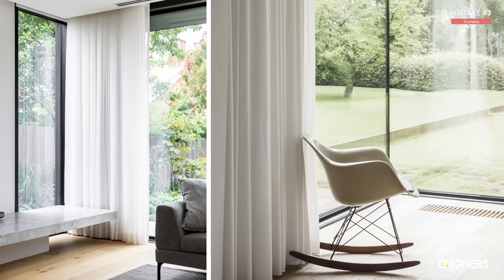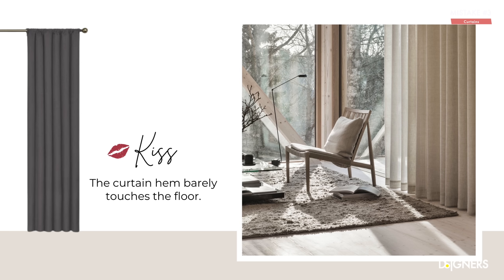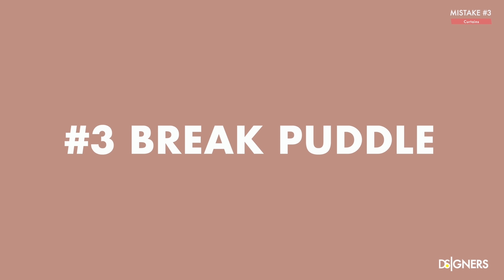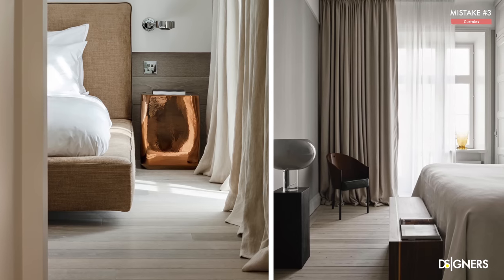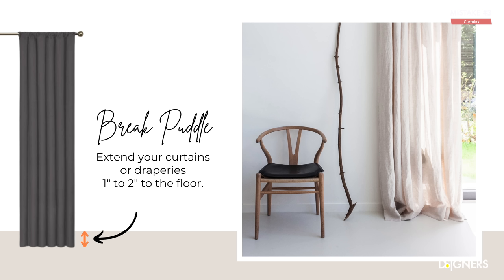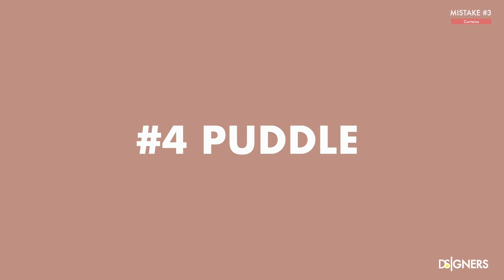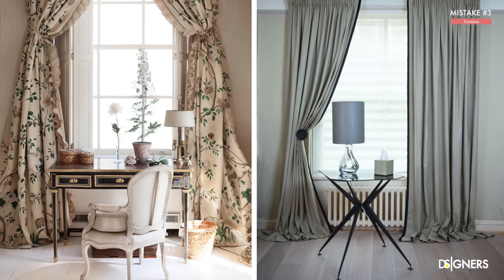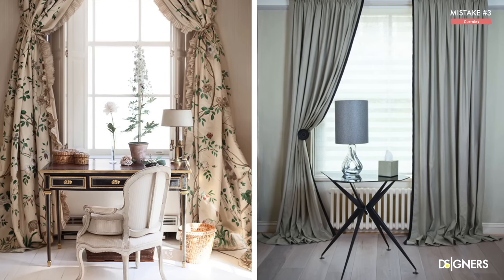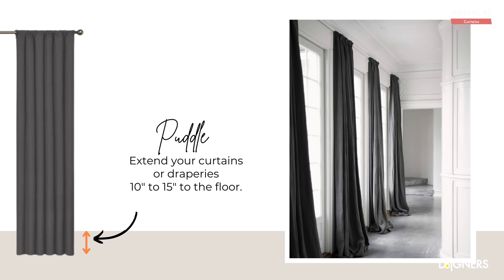For a contemporary and transitional theme, the kiss is your go-to option — it's elegant yet not too flashy. It's the most challenging curtain length as you need to achieve a curtain hem that barely touches the floor. For an informal and relaxed look, extend your curtains one to two inches to the floor — a popular solution for interior designers. For formal and traditional themes, heavy puddling of fabric creates volume and a dramatic effect. Add ten inches in length for that effect, and it is advisable to use rich, opulent fabrics such as velvet.